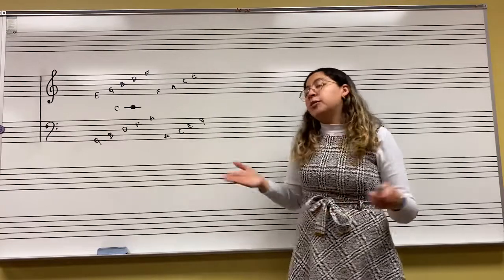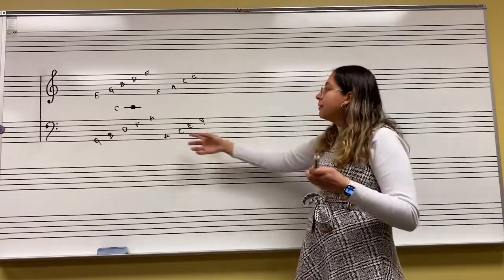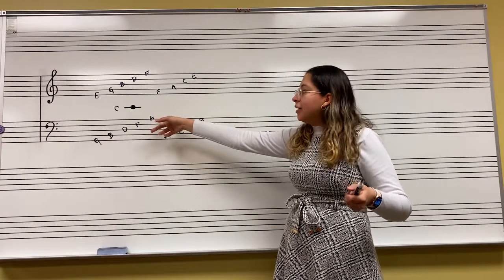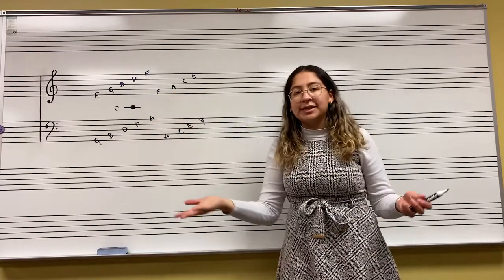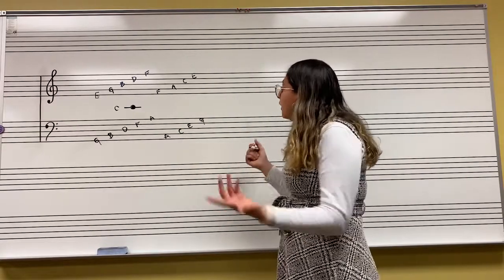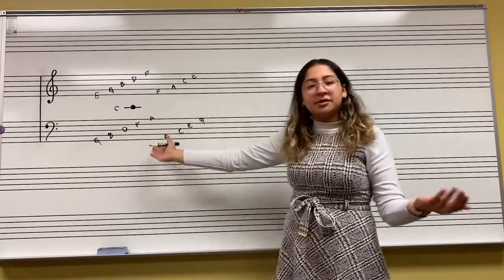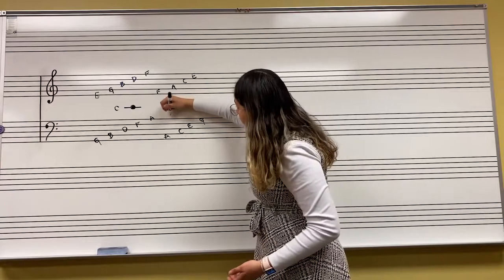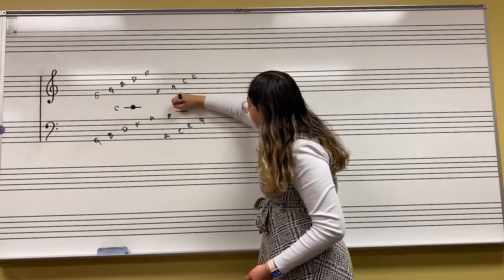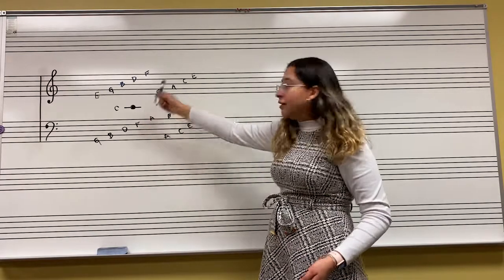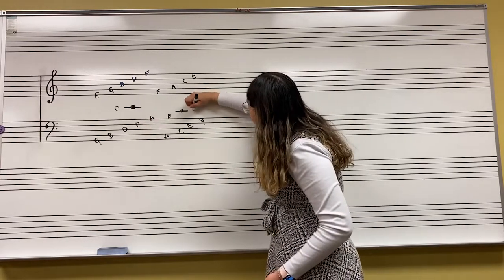So if you wanted to place something higher than this A, then you would write a ledger line giving you a C for the next line. So if we were to continue, let's just for example say in bass clef, for the next space it would be B. The next line, this would be middle C, and then we'd have to draw the ledger line again to give us this D.